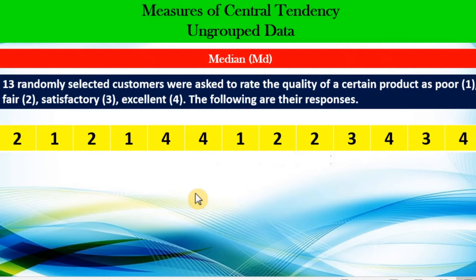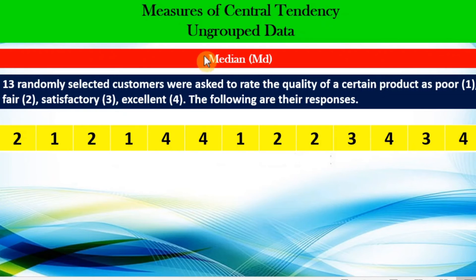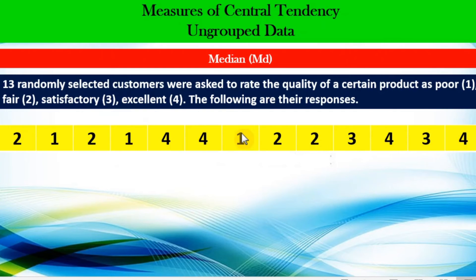Another problem: we have 13 randomly selected customers who were asked to rate the quality of a certain product as poor, fair, satisfactory, or excellent. The values 1, 2, 4, and so on are just codes for their responses — for example, the first customer said 2, meaning fair, and the last customer said 4, meaning excellent. Why is the median an appropriate measure of central tendency and not the mean? Because our data here is not interval nor ratio. These responses — poor, fair, satisfactory, and excellent — are categorical, specifically ordinal, because we can rank which comes first and which comes last. Therefore, the median is indeed appropriate. Before we identify the median, it is important that we rearrange our dataset first.